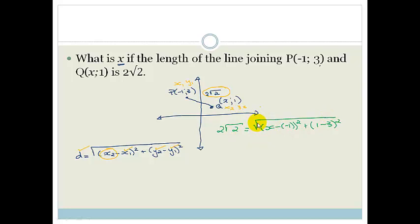Okay. So the first thing I'm going to do is get rid of the square root. So the way I'm going to do that is I'm going to square both sides. So therefore, this becomes 4 times 2 is x minus times minus is plus, it's plus 1 all squared plus 1 minus 3 is minus 2 all squared. So 4 times 2 is 8 is equal to (x plus 1) squared plus 4. Therefore, we've got that 8 minus 4 is equal to (x plus 1) squared. Therefore, 4 is equal to (x plus 1) squared.